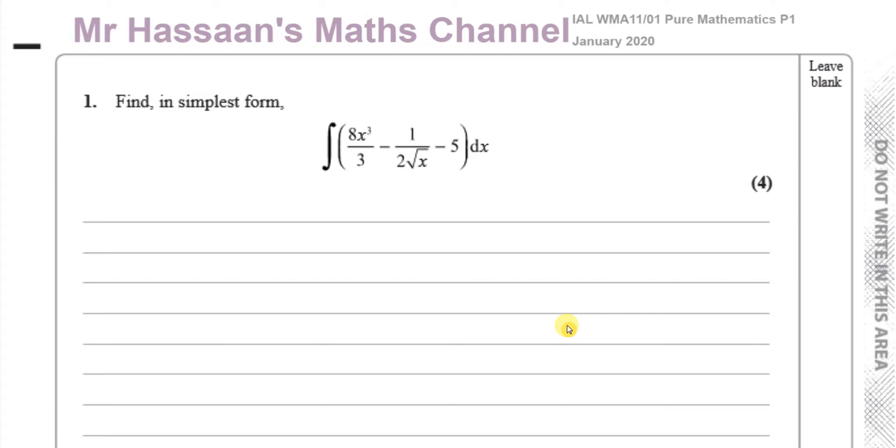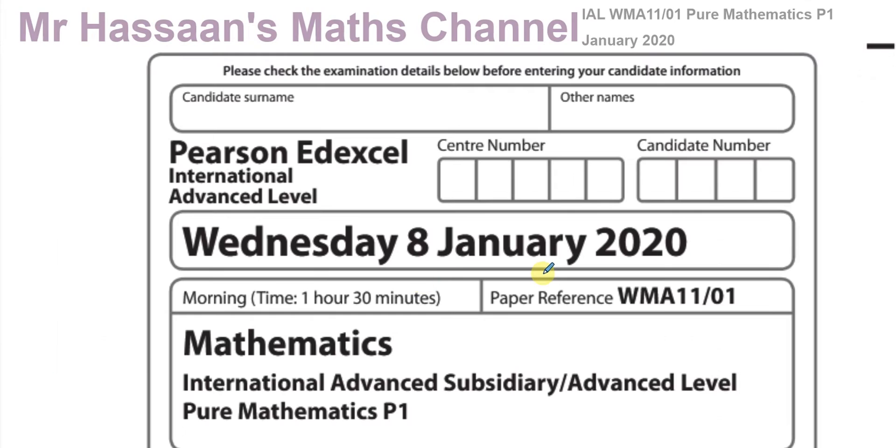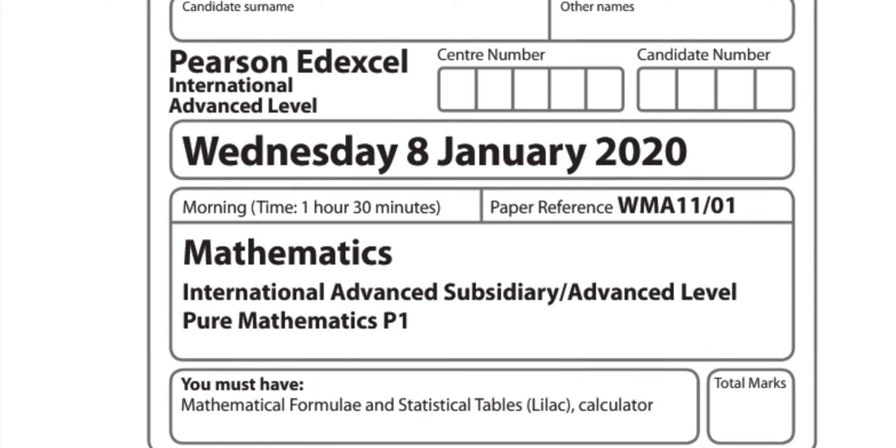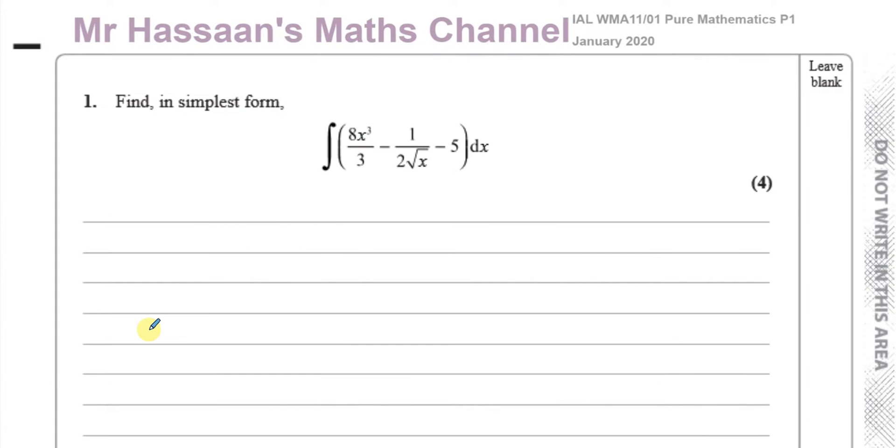I am now going to go through the January 2020 International A-Level P1 Pure Mathematics 1 paper. I'm going to go through the whole paper, but I'll do it question by question so I can classify the questions according to topics.